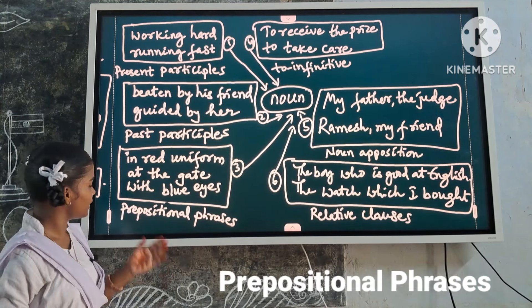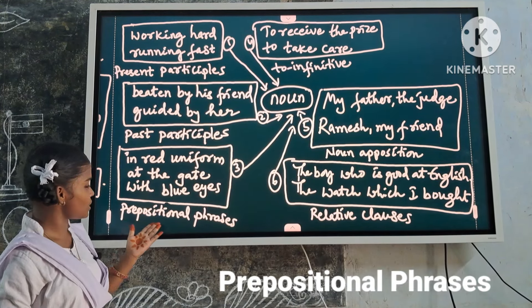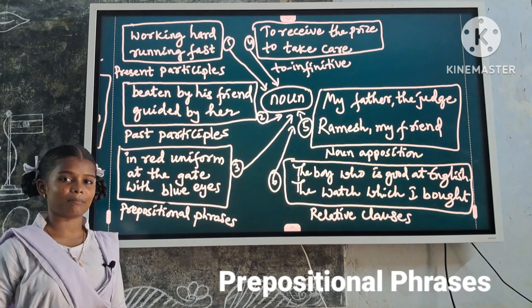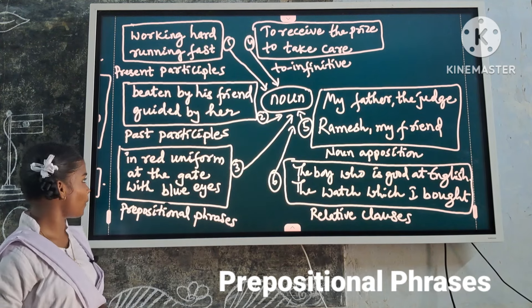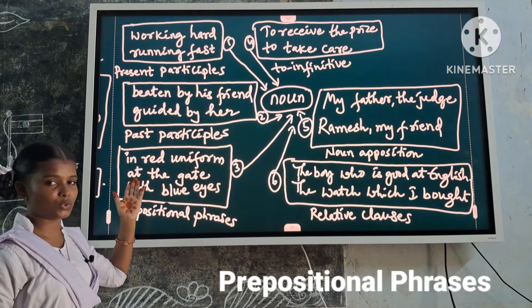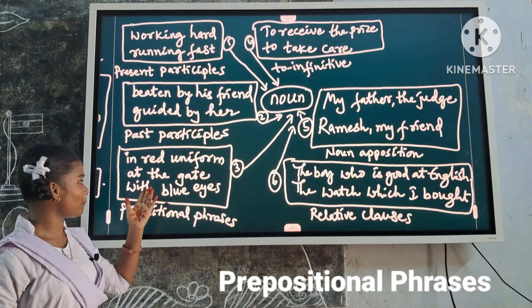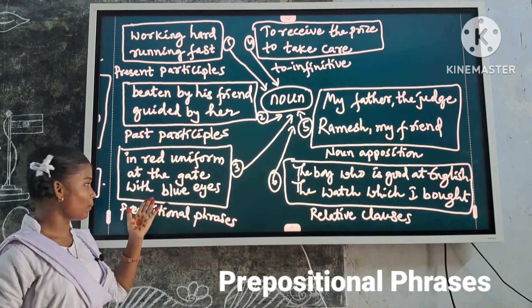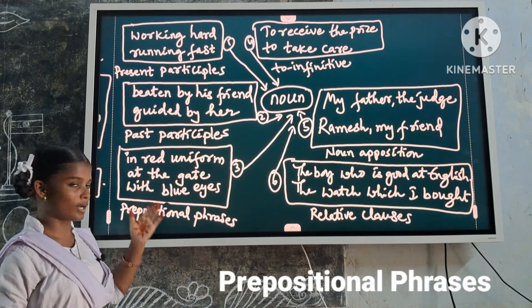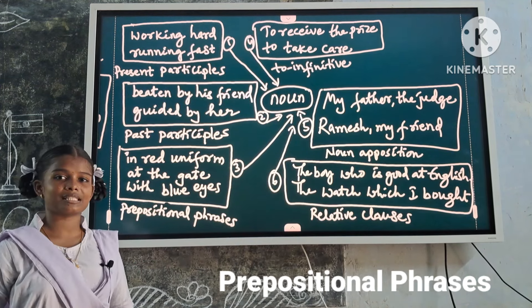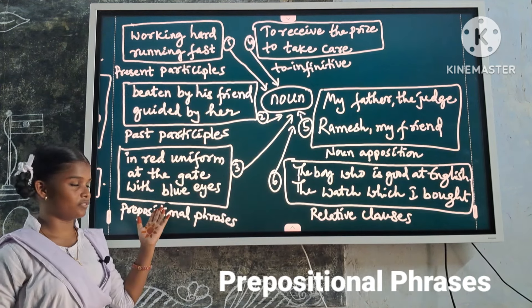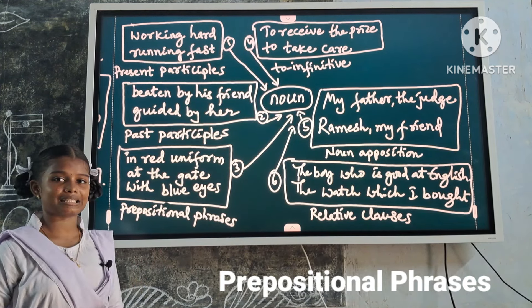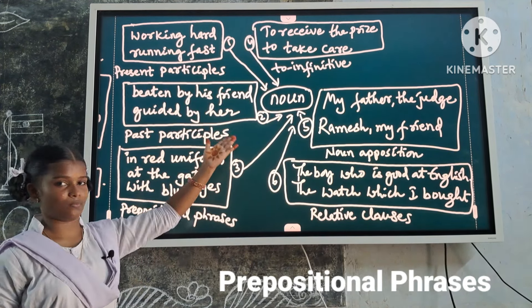Next one: prepositional phrases as post-noun modifiers. Examples: the boys in red uniform, the boys at the gate, the boys with blue eyes. These are noun modifiers because they describe the noun.